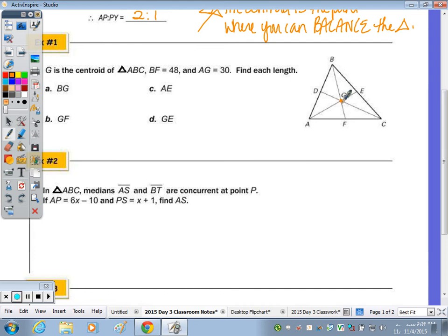G is our centroid. It says that BF is equal to 48, the length, and then the length of AG is 30. So let's start with one of the medians, let's look at BF. So the length of this whole median is 48. Because the ratio is two to one, so BG is two-thirds of the whole length, where GF is one-third, I would first divide 48 by 3 to find out what the third would be. 48 divided by 3, or one-third of 48 is 16. So that's the smaller piece, the smaller segment of the median. Then just double it for the larger. Double 16, you get 32.